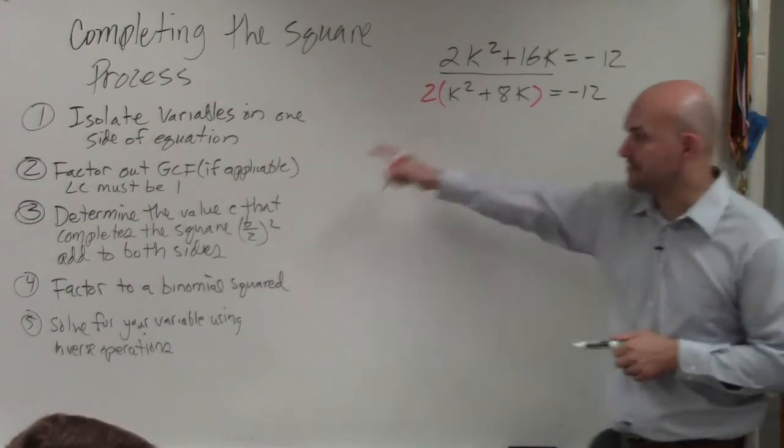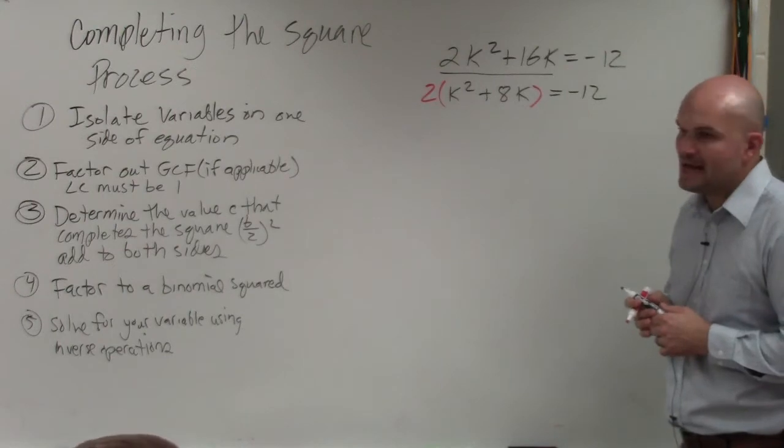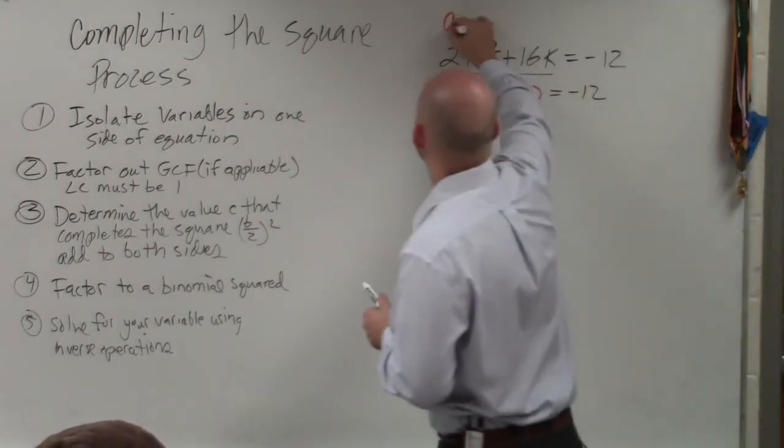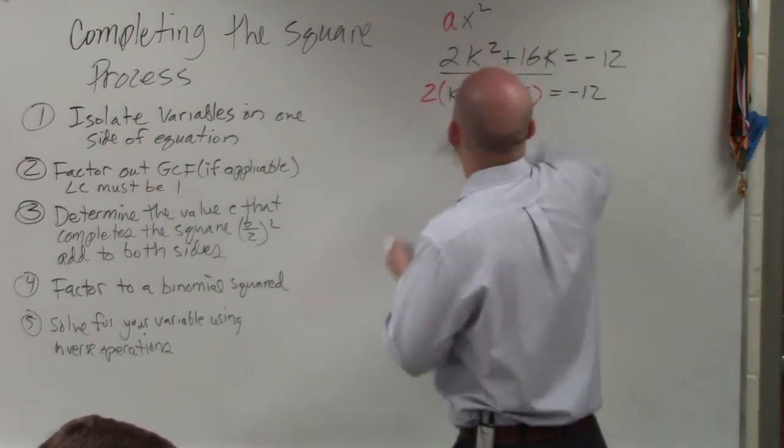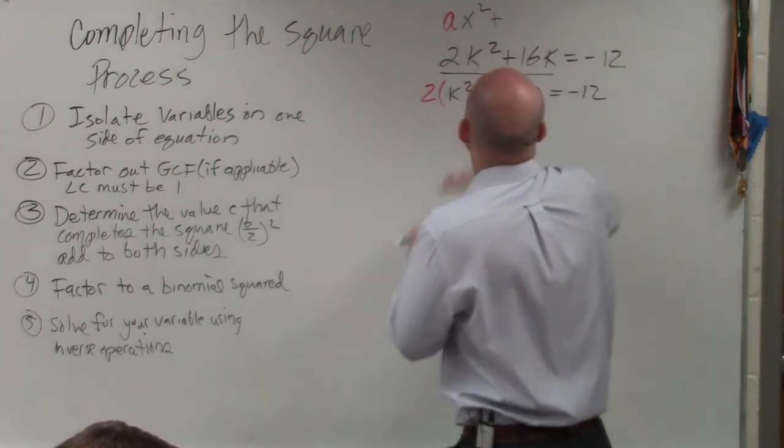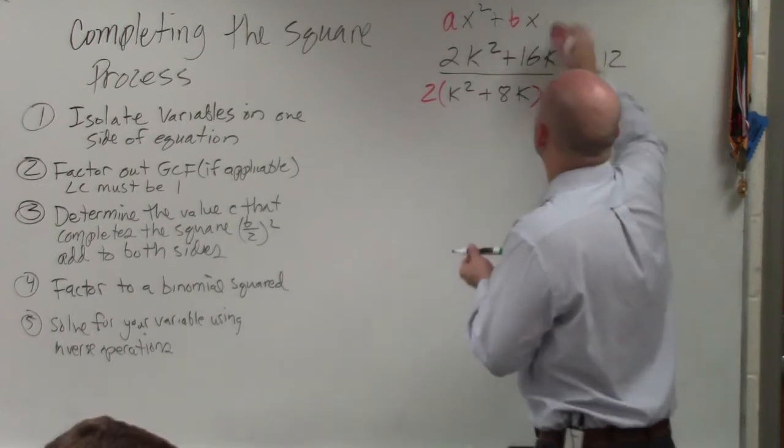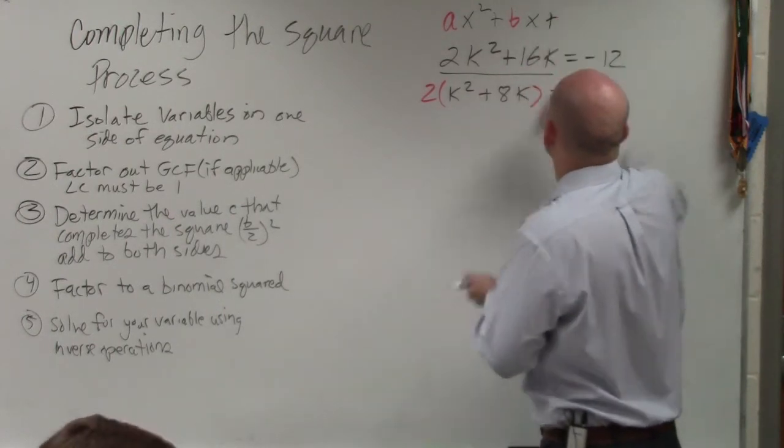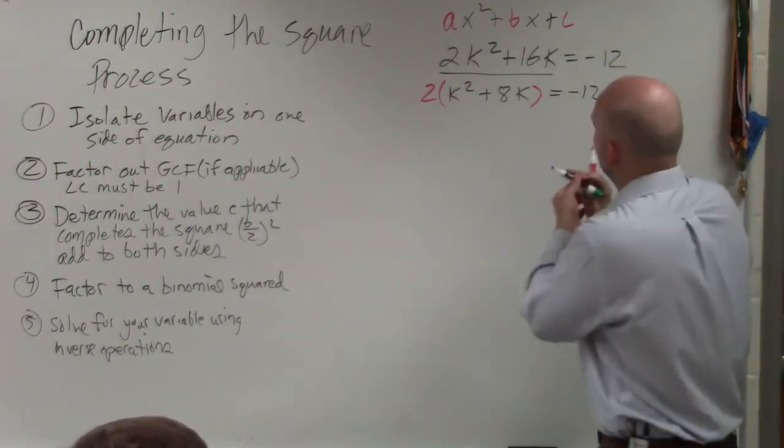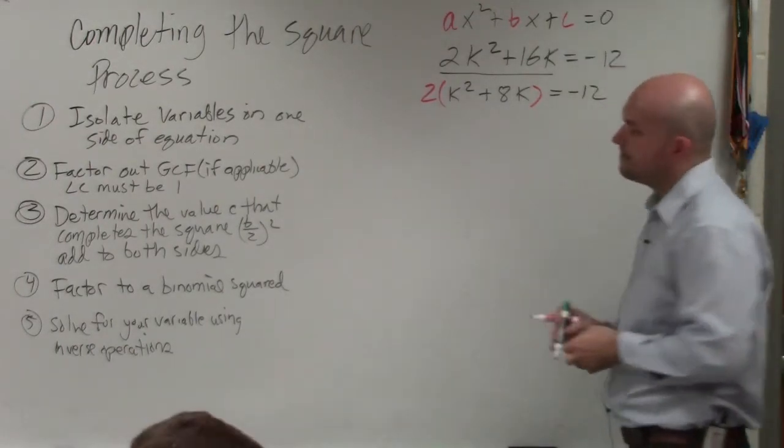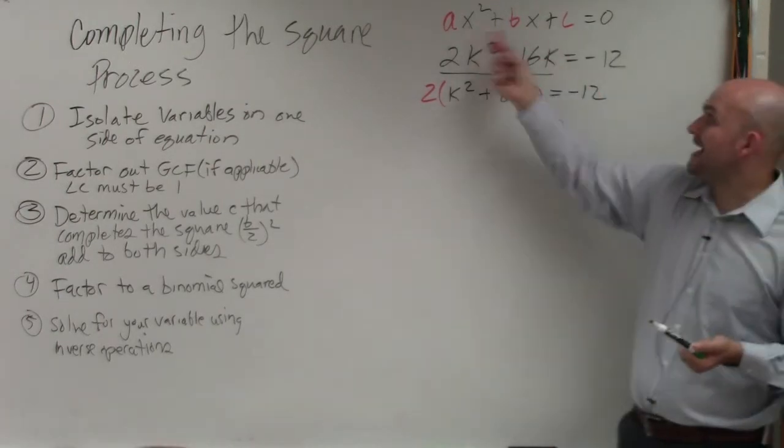Now step number three. Determine value C that completes the square. B divided by 2 add to both sides. So if you guys remember, when you have a quadratic equation, Ax squared plus Bx plus C, right, that is a quadratic equation. So when you have a quadratic equation equal to 0 or equal to y, whatever, A, B, and C.